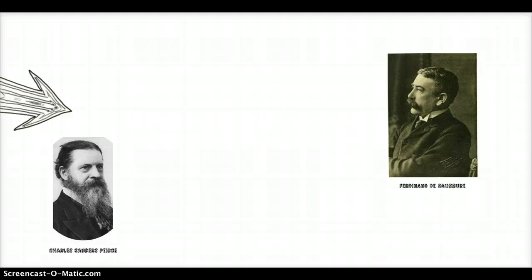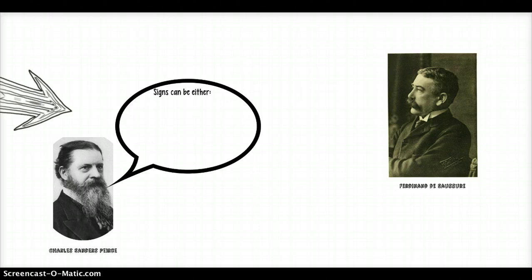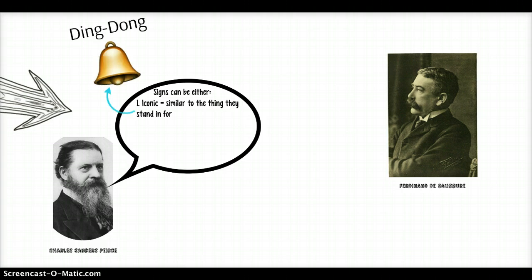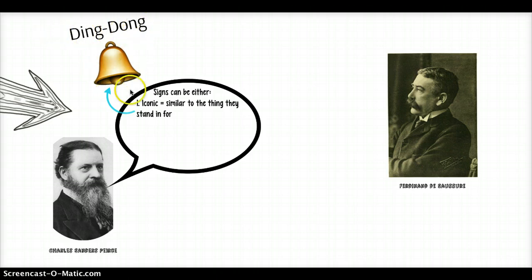Once Peirce made that claim, what's most interesting is the respects and capacities of the sign — how can a thing stand in for something else? He says signs can be iconic: similar in some way to the thing they stand in for. These are signs for a bell — if somebody says 'ding-dong,' or draws a picture of a bell, and it makes you think of a bell, these are iconically representing it, because they are similar to the object they stand in for.